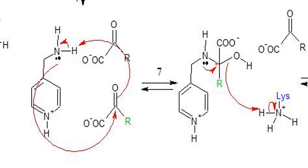As a result we form a tetrahedral intermediate, and the keto group becomes a hydroxyl group because it takes a hydrogen from the amine group of PMP, reforming the lone pair. The lone pairs then try to form an imine again, and that causes this bond to be released, kicking out this hydrogen. The hydroxyl group takes back its hydrogen from the lysine residue.